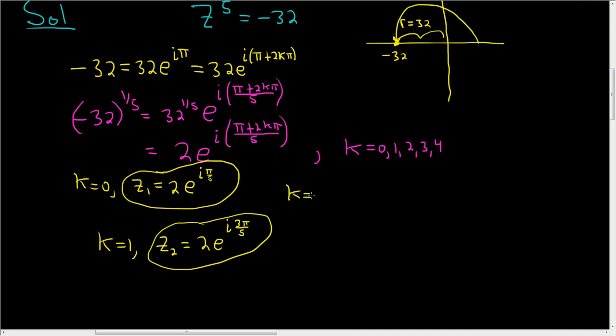When k equals 2, we get z3 equals 2 e to the i. Plugging in 2: 2 times 2 pi is 4 pi, plus pi is 5 pi. So 5 pi over 5 equals 2 e to the i pi. Since e to the i pi is negative 1, we get 2 times negative 1, which is negative 2. So z3 equals negative 2.